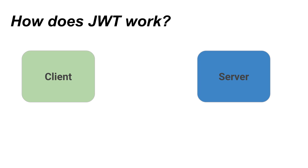In our example, we have a client and a server. The client wants to access some protected data on our server, but the server knows clients cannot be trusted. The server only wants to give the data to a trustworthy client.